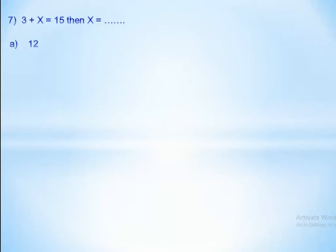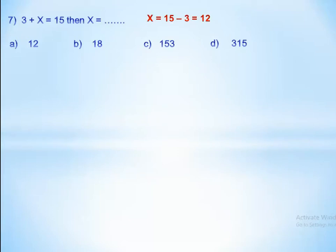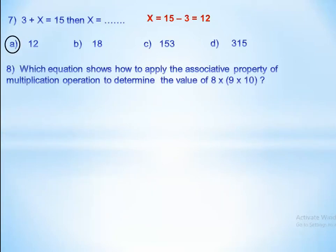For the equation 3 plus x equals 15: in addition, the whole is 15 and the parts are 3 and x. To find the missing part, we subtract the whole minus the known part — that is 15 minus 3 equals 12. So x equals 12.